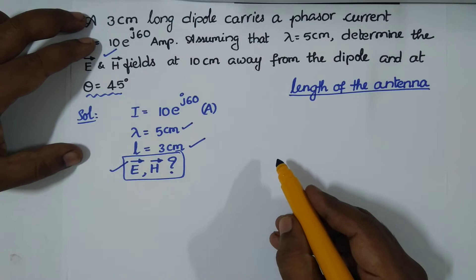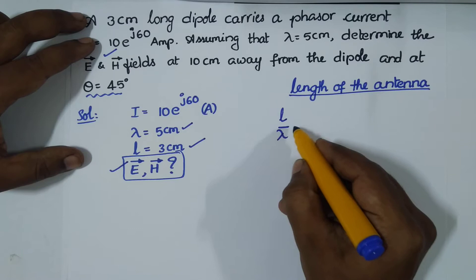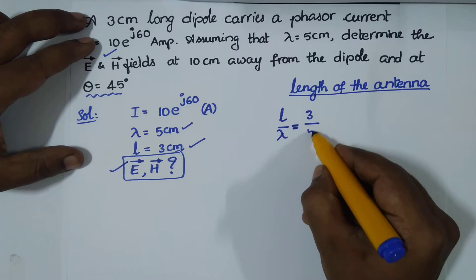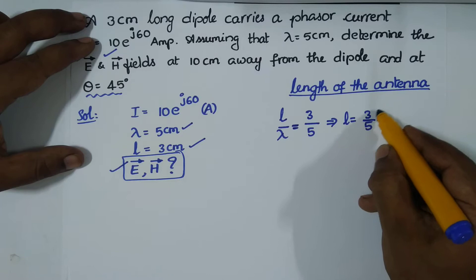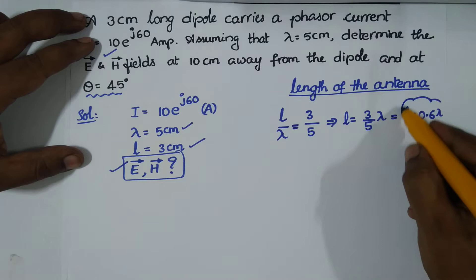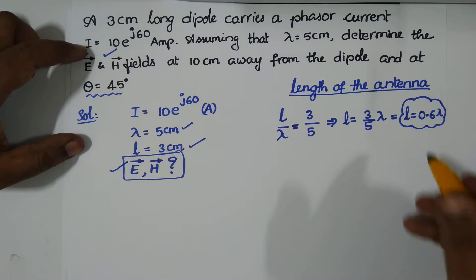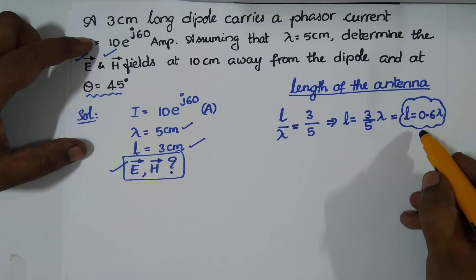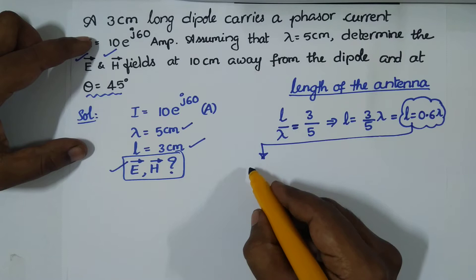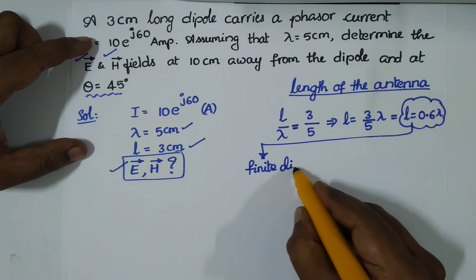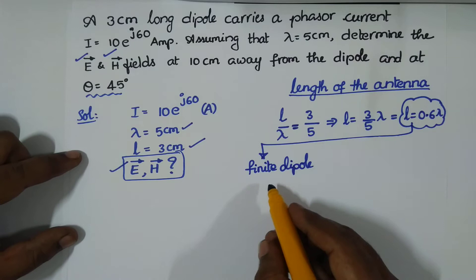We also have lambda = 5 centimeters. Taking the ratio l/lambda: l = 3 and lambda = 5, so l = (3/5)lambda = 0.6 lambda. We obtained the length of the antenna as 0.6 lambda. From this we can conclude that this length comes under a finite dipole antenna.